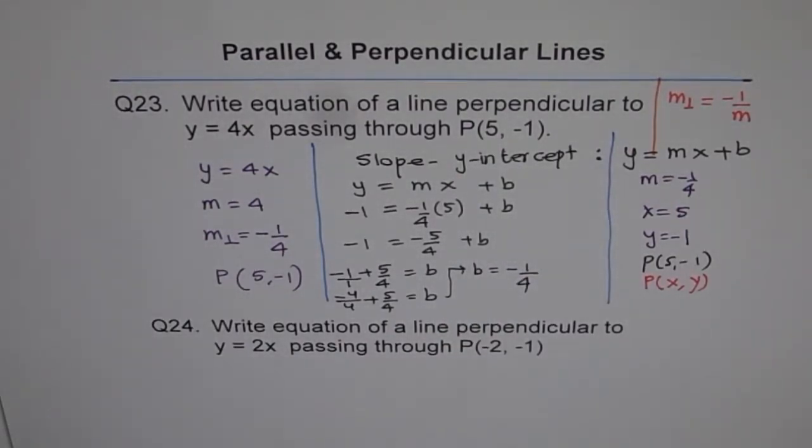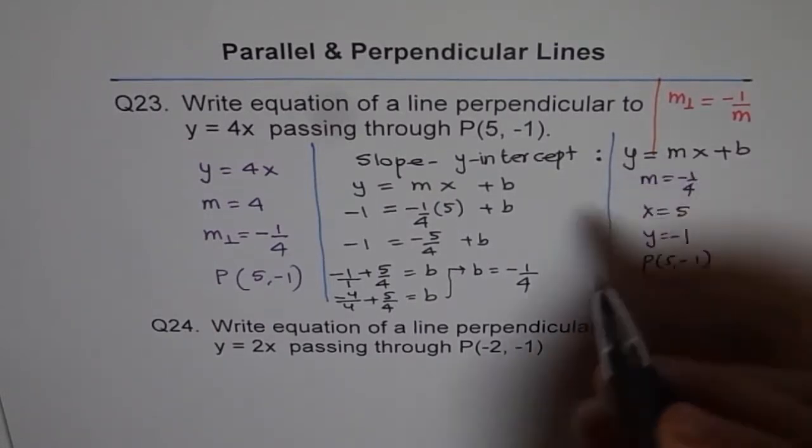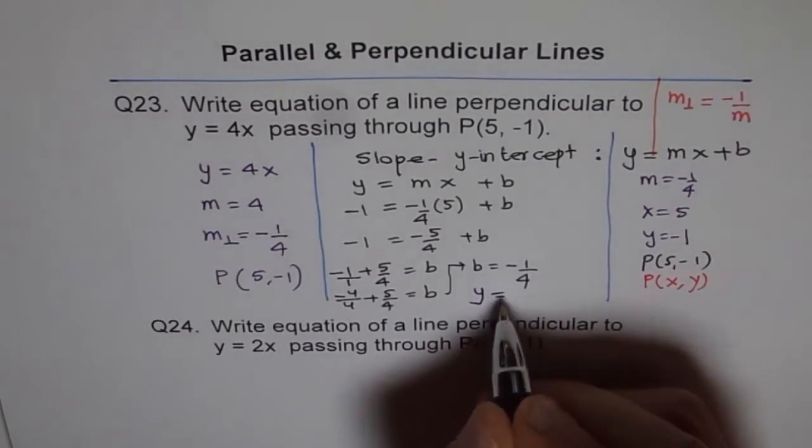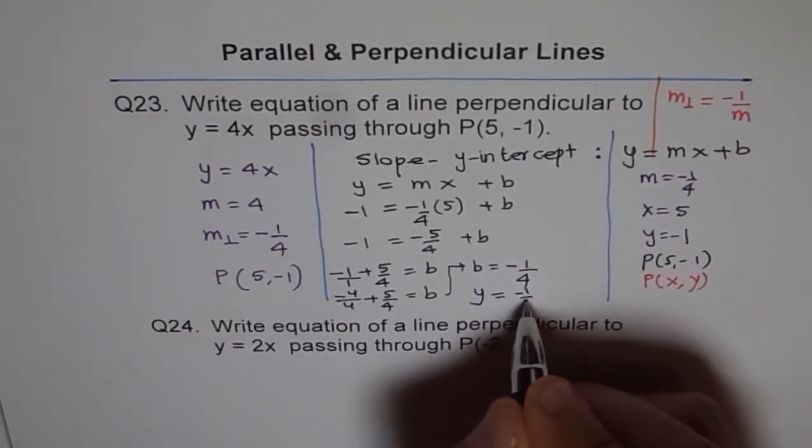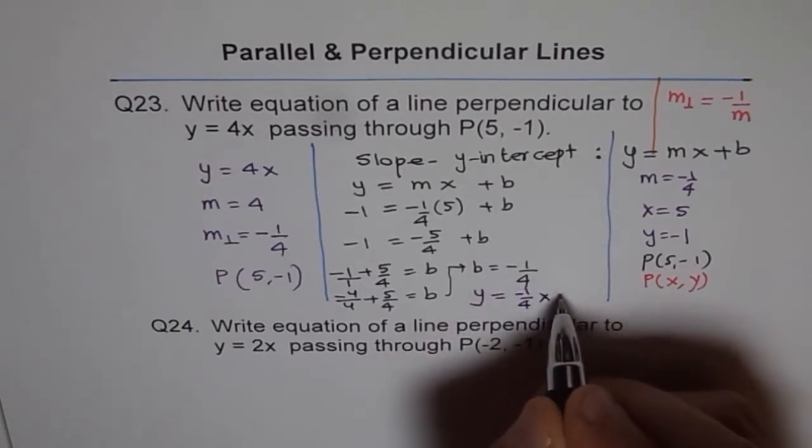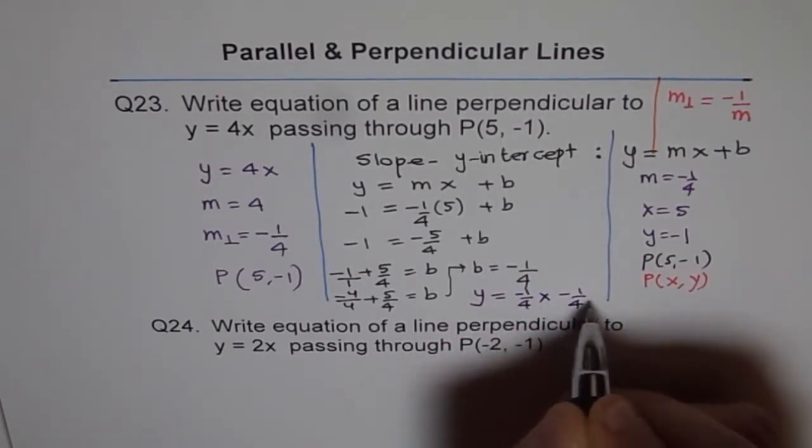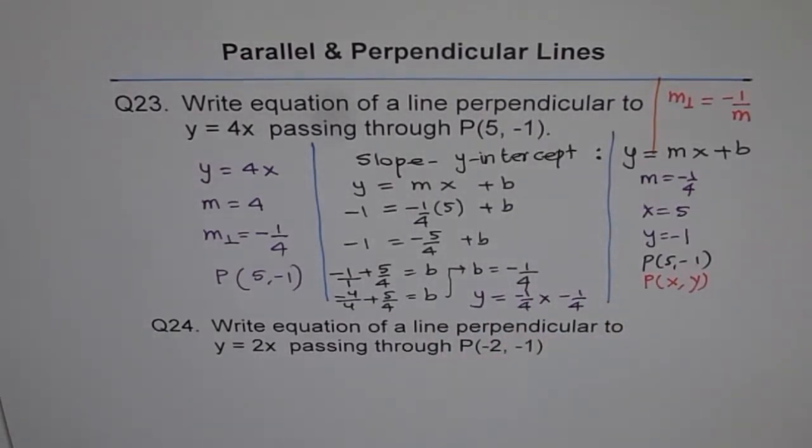Once we know b, then we can write equation. The equation becomes y equals m, which is minus 1 over 4, x and b is 1 over 4. So that is the equation of our line.